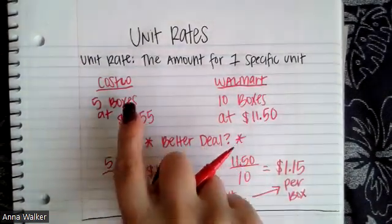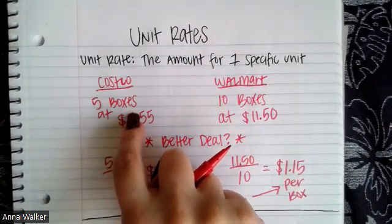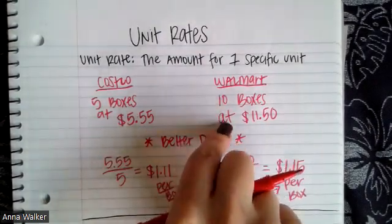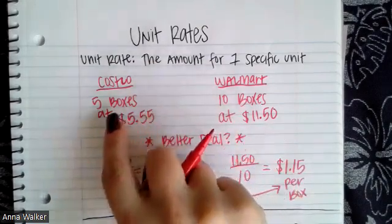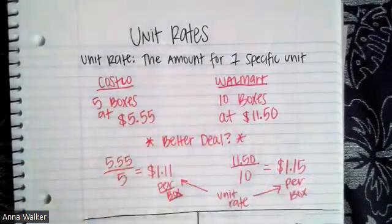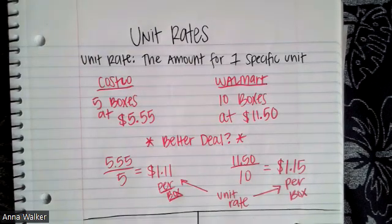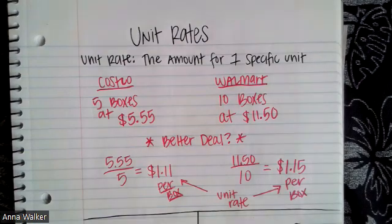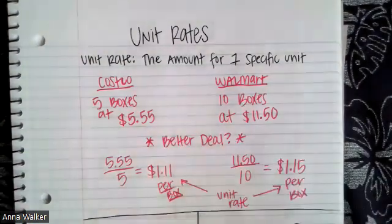We could have also figured this out by doubling. We could have done, how much does it cost for 10 boxes at Costco? Because at Walmart 10 boxes cost $11.50. So if I double this, is it going to be less than $11.50? And it ends up being a little bit less than $11.50. So that is how we can calculate a unit rate given two different scenarios.